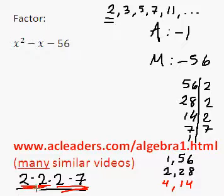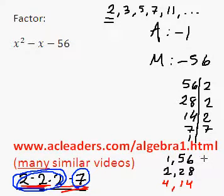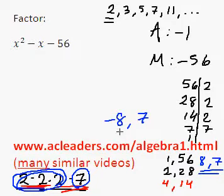We could also pick 2, 2, and 2 and 7. 2 × 2 × 2 is 8 and we have 7. Well, that looks like a good choice because if we have -8 and +7, those will add up to -1. Mission accomplished!